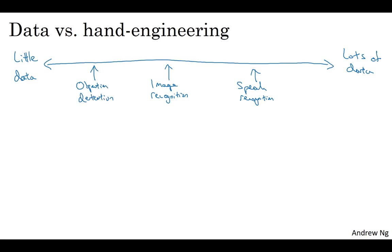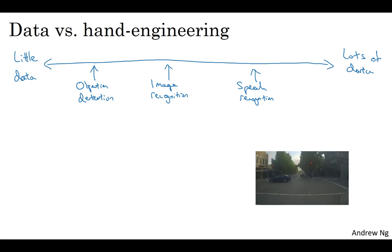Just as a reminder, image recognition was a problem of looking at the picture and telling you, is this a cat or not? Whereas object detection is looking at the picture, and actually, you're putting the bounding boxes, and telling you where in the picture the objects such as the cars are as well.